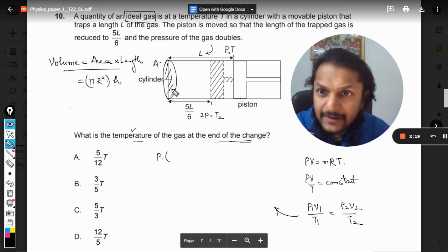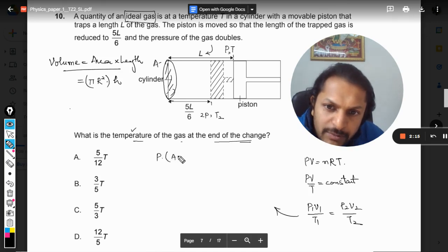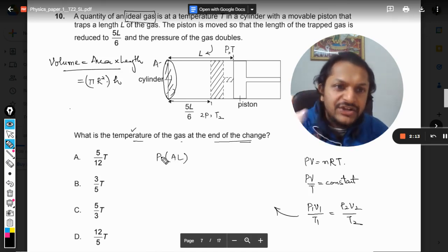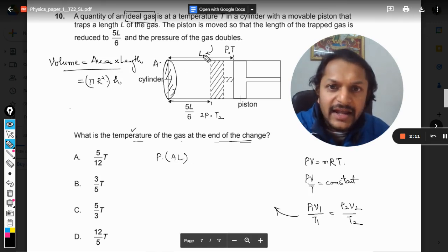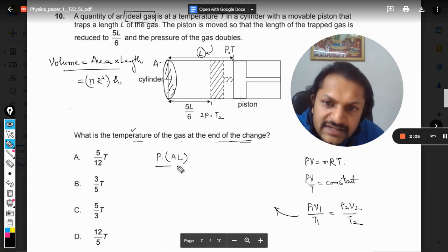So anyways we can apply this formula now, whether this is a circular base or whether it is a rectangular cross-section or a square cross-section, it doesn't matter at all. We just need to find the area A. So we are just going to call it A. Now what is the volume here? It will be A into L because initially A is the area and L was the length.